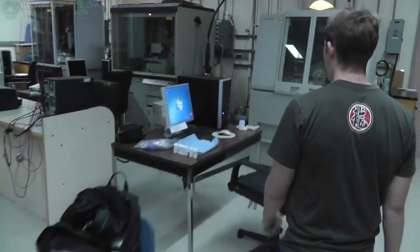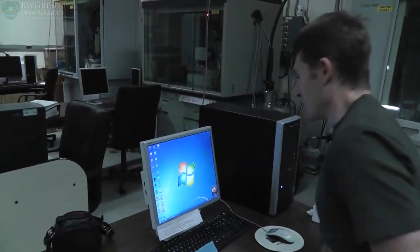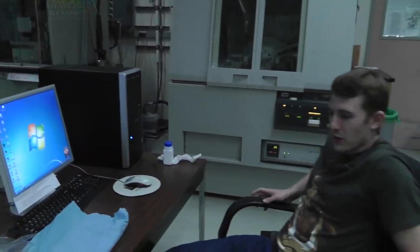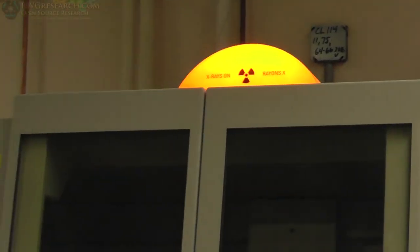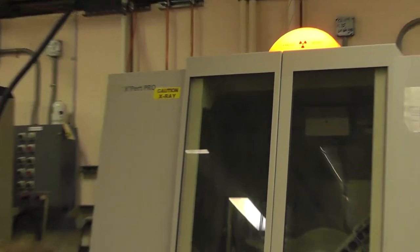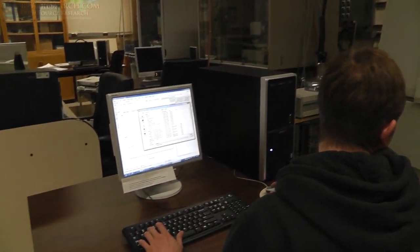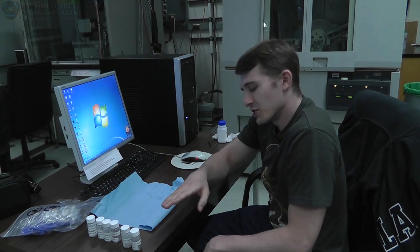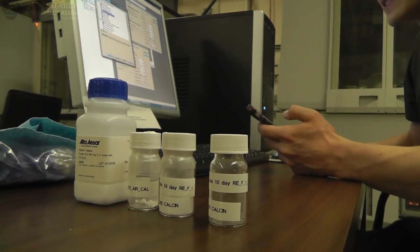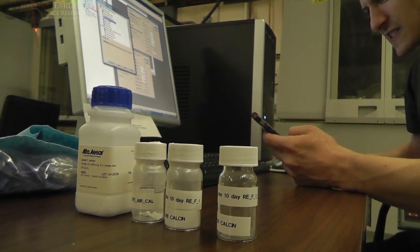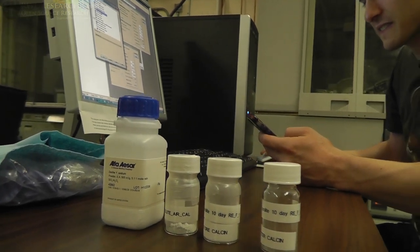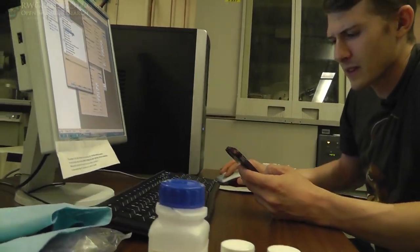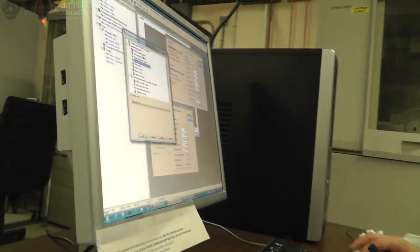So briefly explain what XRD is, real briefly. Sure, so in X-ray Diffraction, which is what XRD stands for, you've got X-rays coming in from an X-ray source, usually a copper K-alpha, so it's like a copper X-ray source, and it'll release these X-rays that'll hit your sample, and when it hits your sample, it will interact at the atomic level with the lattice of your material.